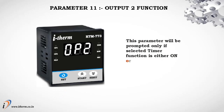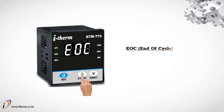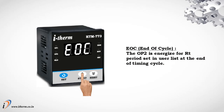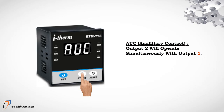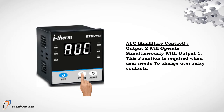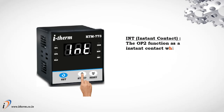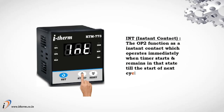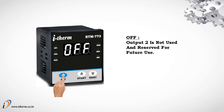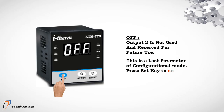Parameter 11: Output 2 function. This parameter will be prompted only if the selected timer function is either on delay or off delay — not applicable for cyclic modes. End of cycle: output 2 is energized for the RT period set in the user list at the end of the timing cycle. Auxiliary Contact: output 2 will operate simultaneously with output 1; this function is required when the user needs changeover relay contacts. Instant Contact: output 2 functions as an instant contact which operates immediately when the timer starts and remains in that state till the start of the next cycle. Off: output 2 is not used and is reserved for future use. This is the last parameter of configuration mode. Press the set key to enter run mode.